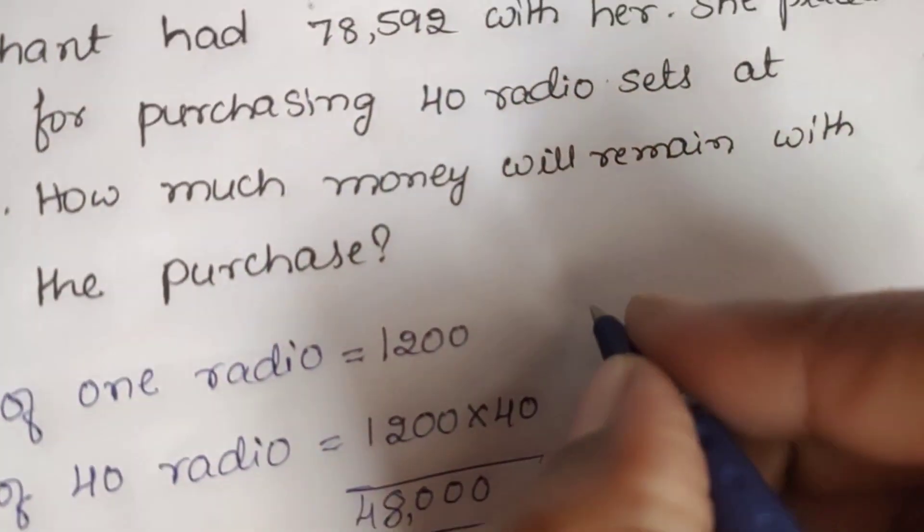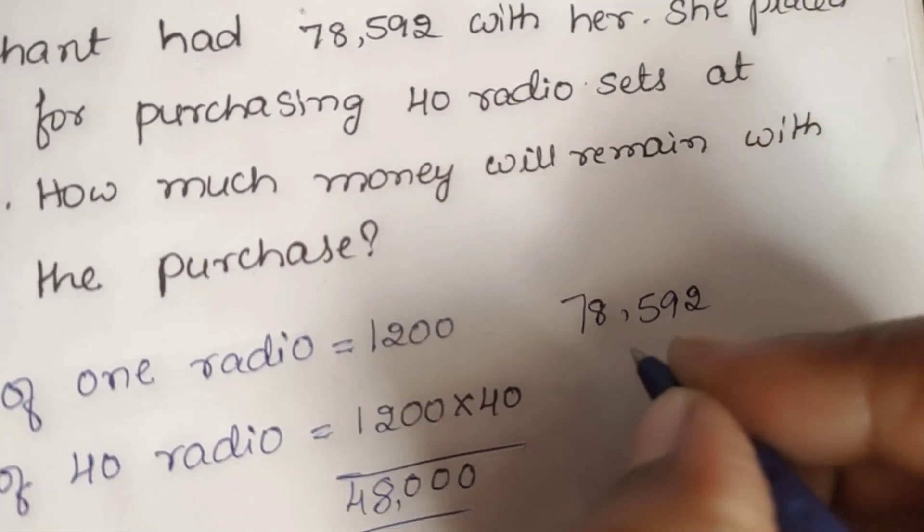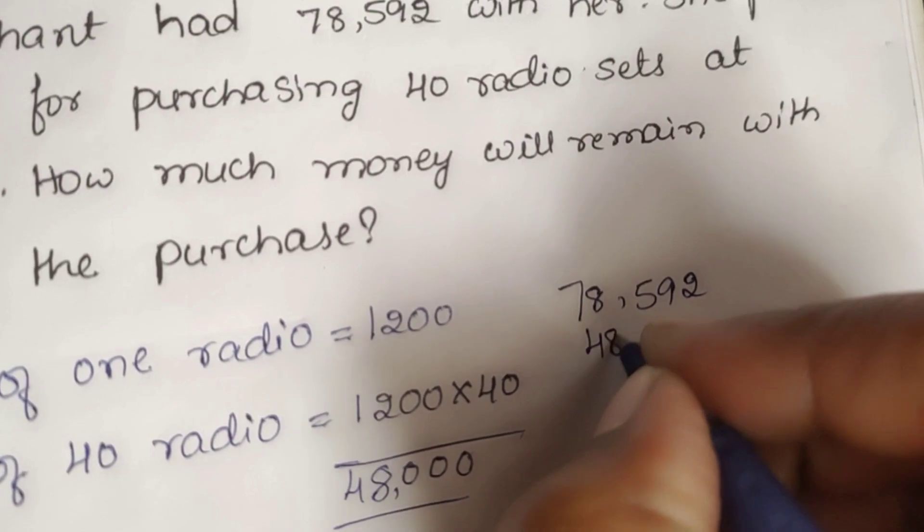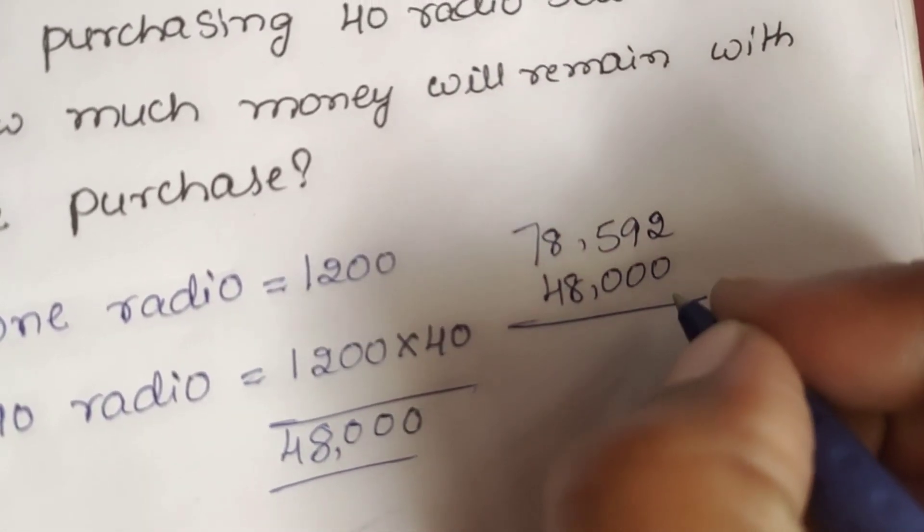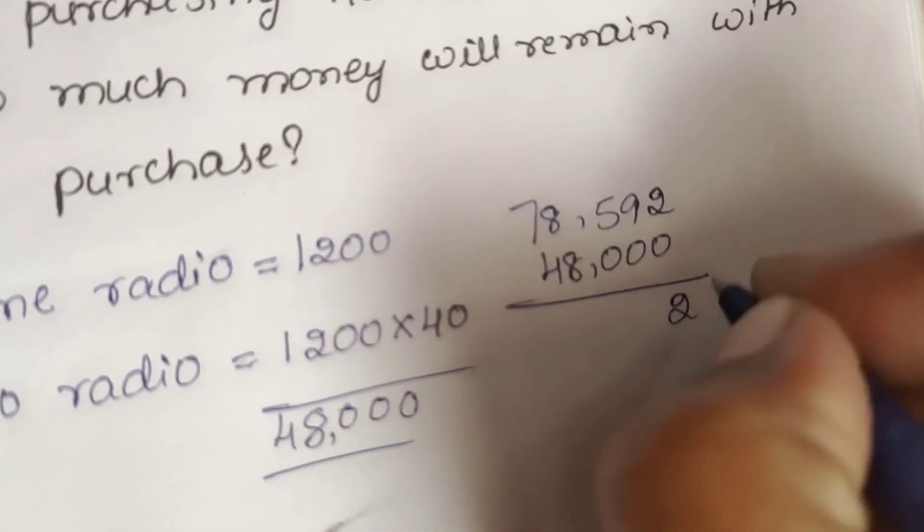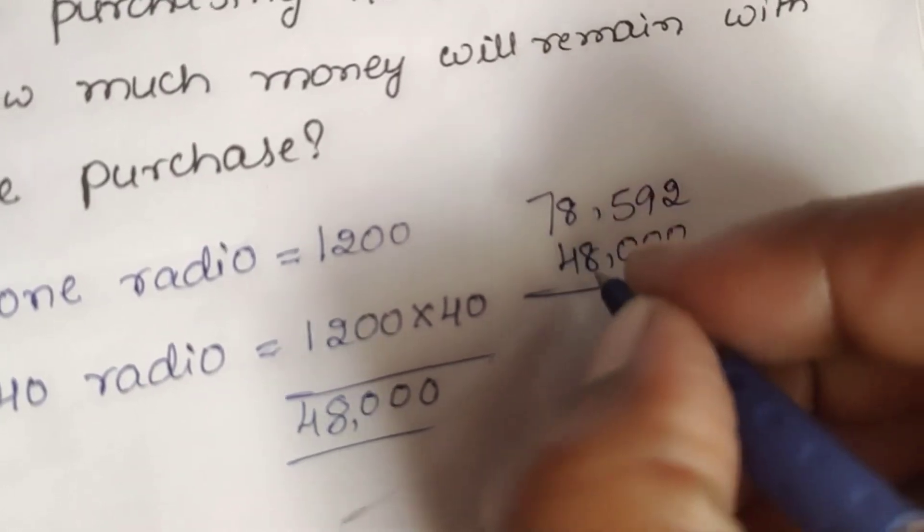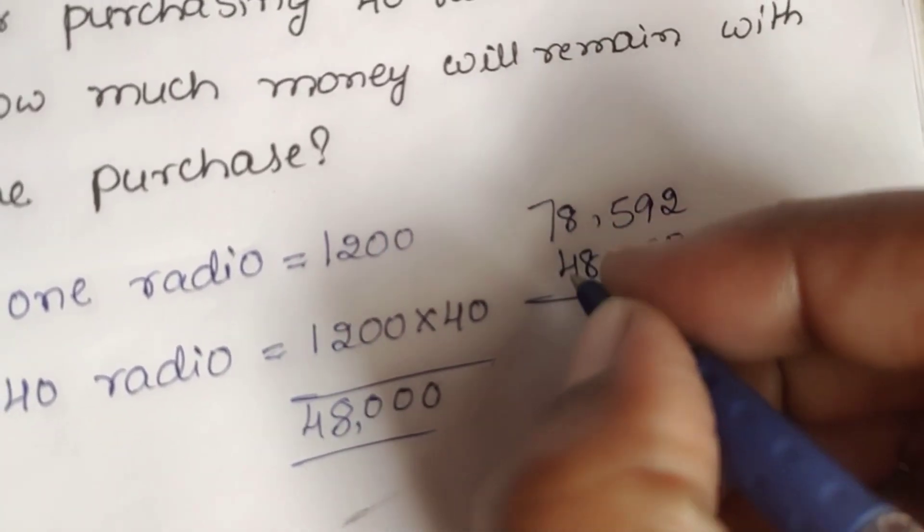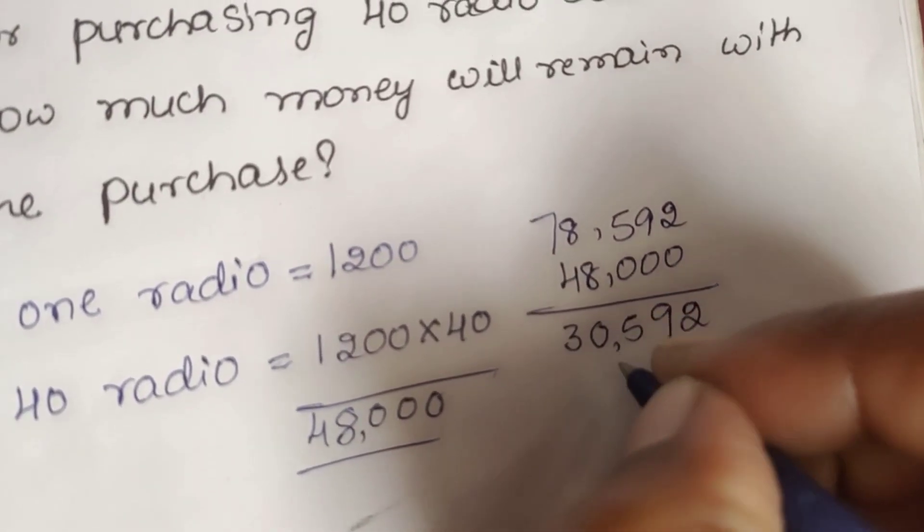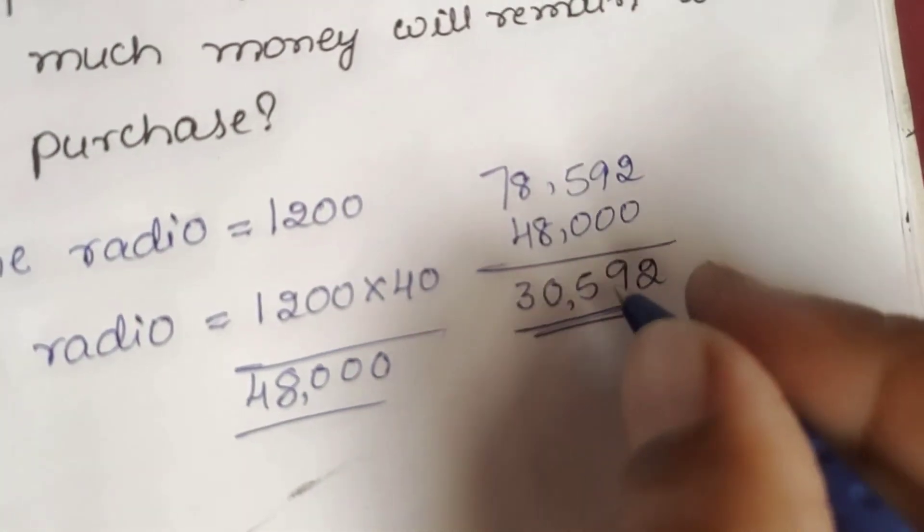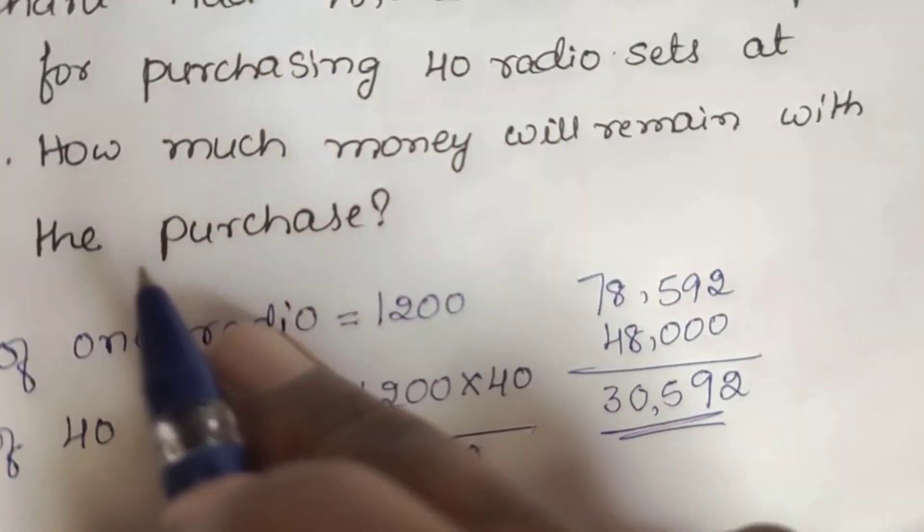She was having 78,592 with her. She spent 48,000 on radios. So, remaining amount we have to subtract. 2 minus 0 is 2, 9 minus 0 is 9, 5 minus 0 is 5, 8 minus 8 is 0, and 7 minus 4 is 3. 30,592 is remaining with her after the purchase.